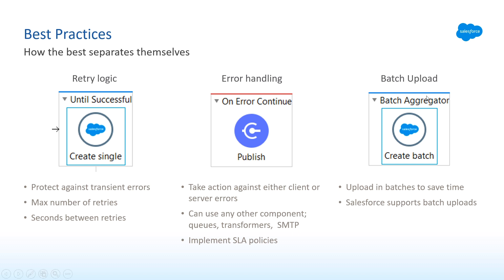The last hardening task is for batch uploads. In our batch case we were creating three calls to Salesforce for every order — if we were loading 100,000 records, this would be 300,000 calls to Salesforce, making for a very time-consuming batch job. What I can do is wrap my batch component Salesforce connector inside a Batch Aggregator. This will collect requests to Salesforce and send them all at once, eliminating the back-and-forth and considerably cutting down the total time the batch job takes to run.